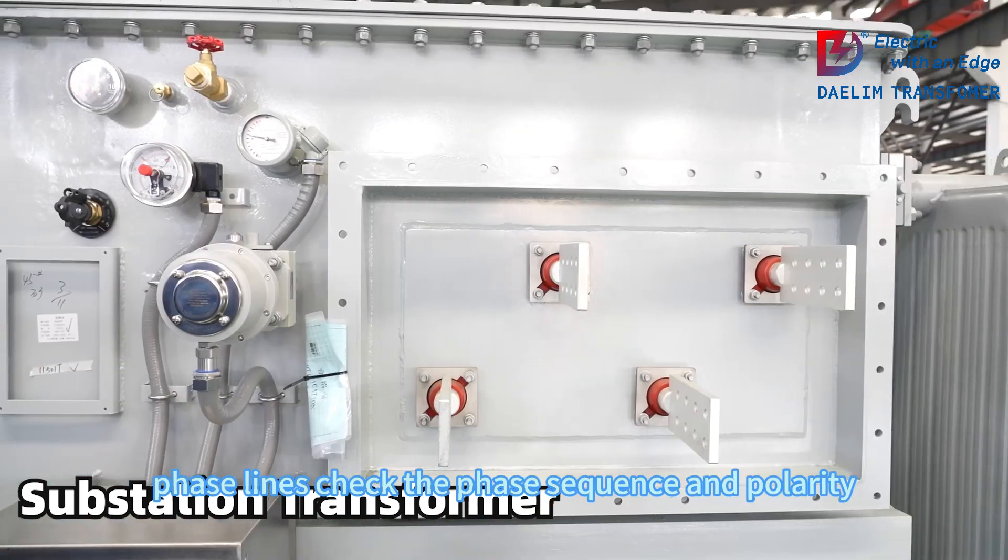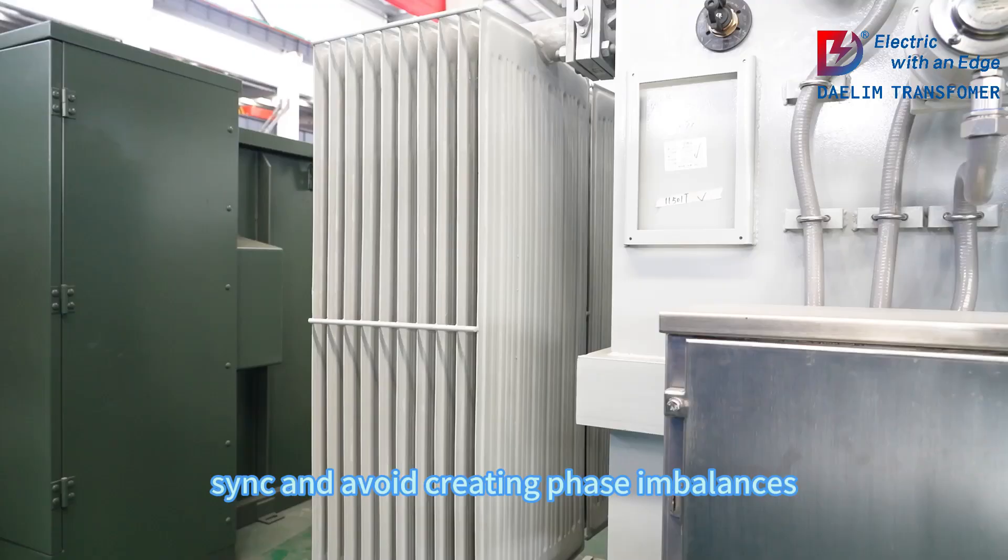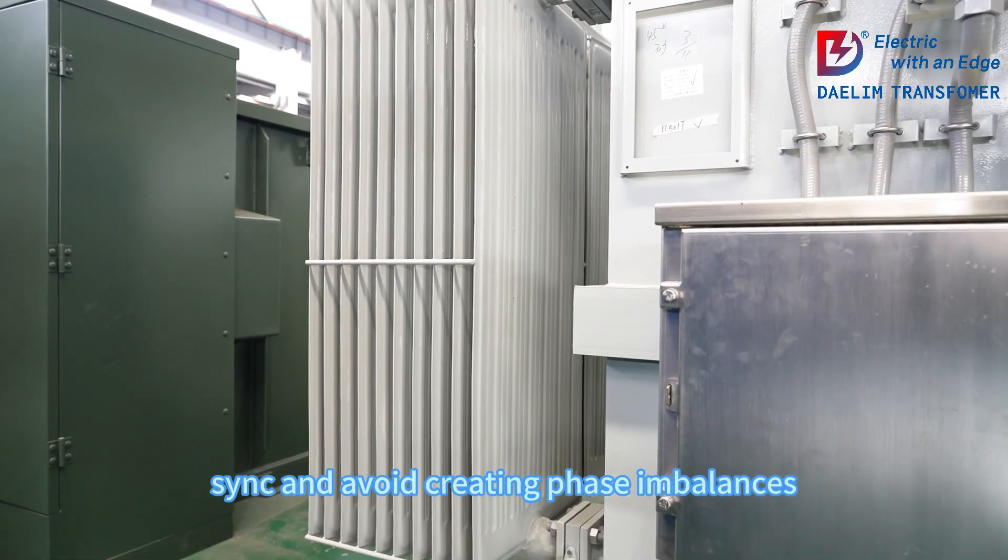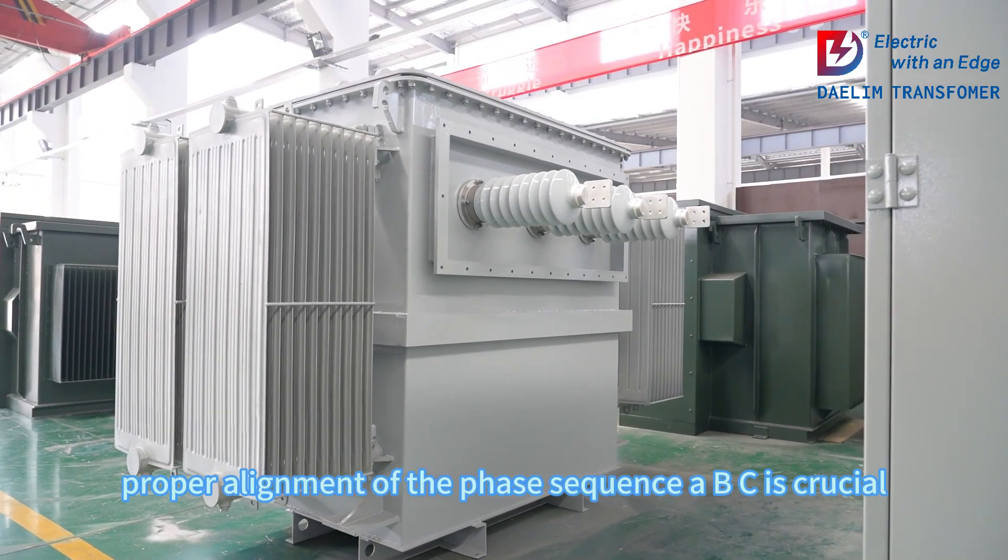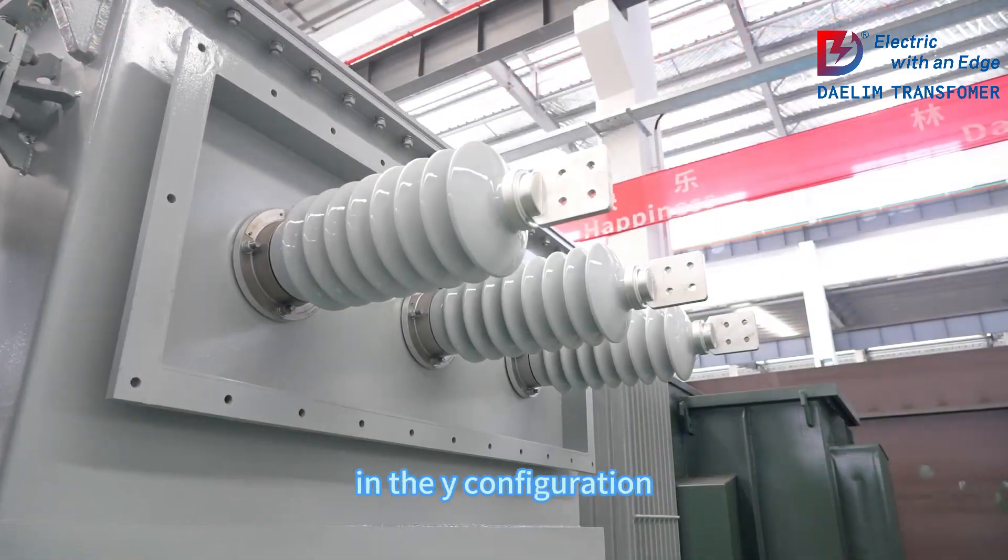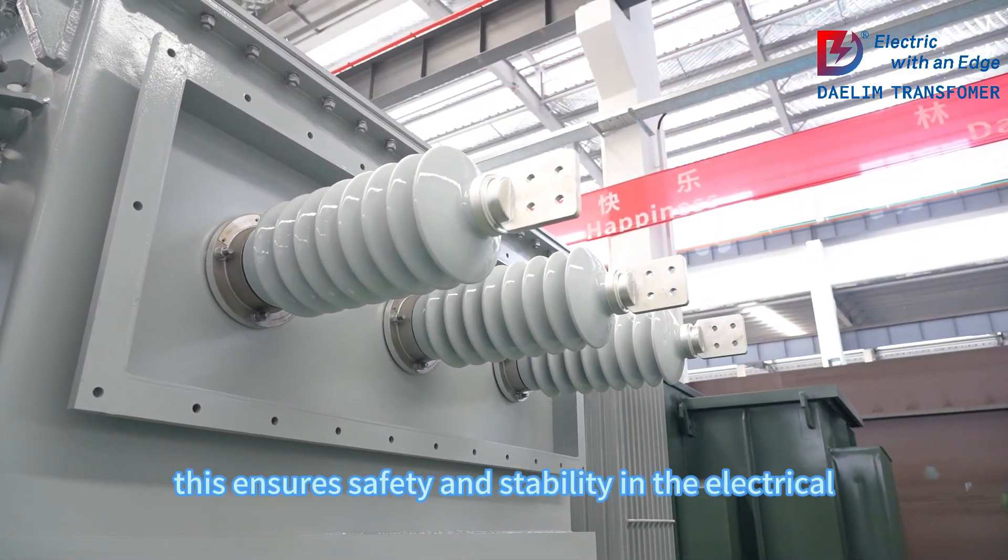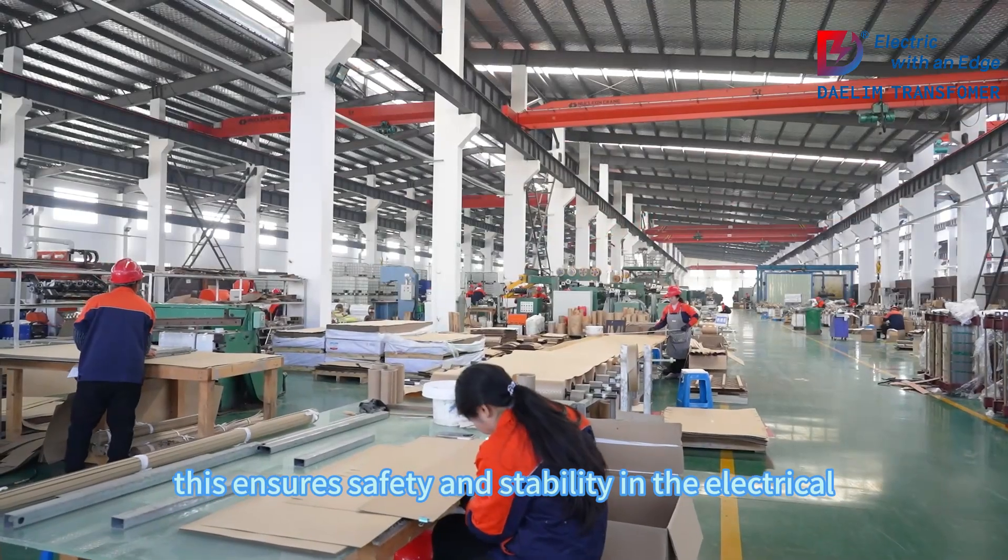Check the phase sequence and polarity to ensure they are in sync and avoid creating phase imbalances. Proper alignment of the phase sequence ABC is crucial. Don't forget to ground the neutral point in the Y configuration. This ensures safety and stability in the electrical system.